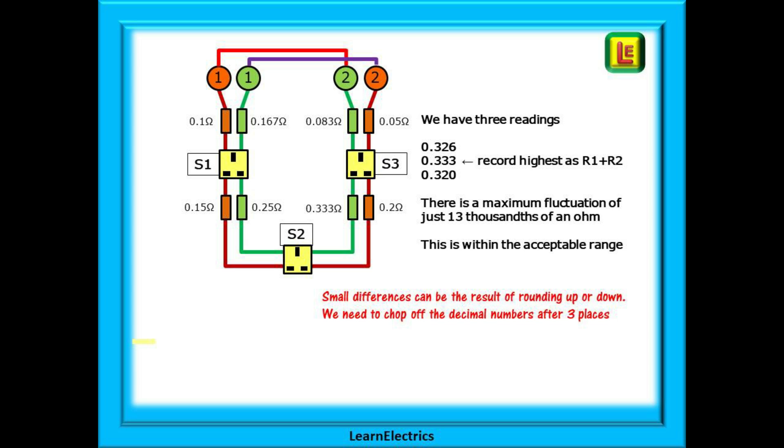Now we have three readings, all slightly different, and we should record the highest as our R1 plus R2, but is this correct? Do these small differences matter? Well frankly, no. The maximum fluctuation or spread shown here is just 13 thousandths of an ohm, and that is nothing and easily within the acceptable range. We would consider all these to be the same.